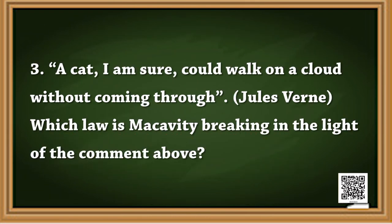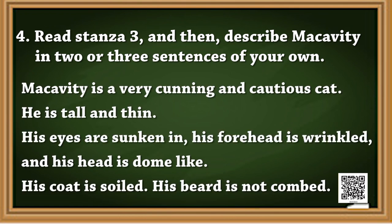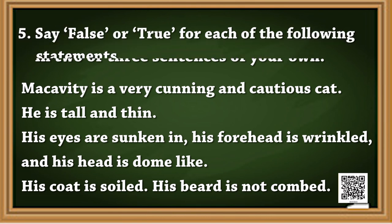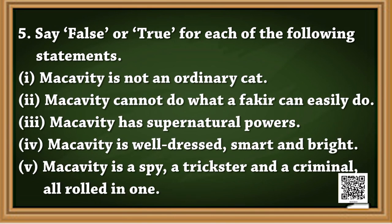Let's quickly go through question number three — I hope you already have gotten the answer, and I'm sure it's right because that's the only law possible there. Then let's move on to question number four, which is: read stanza three and then describe Macavity in two or three sentences of your own. The answer is: Macavity is a very cunning and cautious cat. He is tall and thin. His eyes are sunken in, his forehead is wrinkled, and his head is dome-like. His coat is soiled and his beard is not combed. Question number five is marking whether something is true or false — if you skim read the text, you would get the answer.